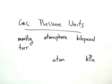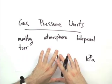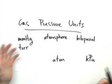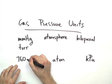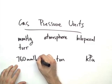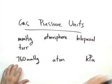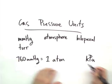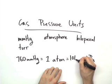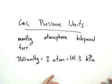In order to do mathematical conversion between these guys, we have to have some sort of equation that explains how they all relate. So here that is. We can say that 760 millimeters of mercury or 760 Torr equals 1 atm, which equals 101.3 kilopascals.